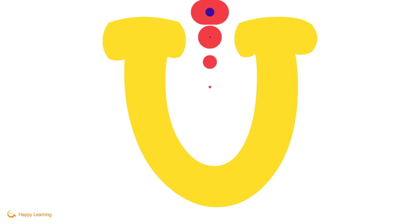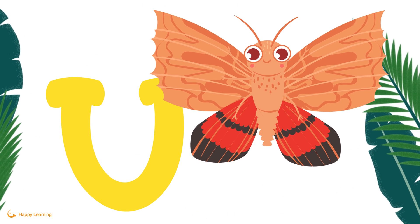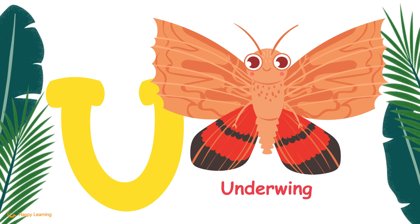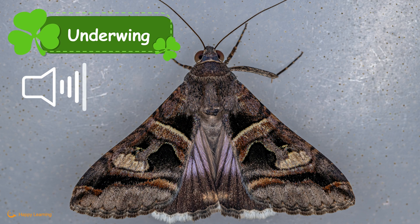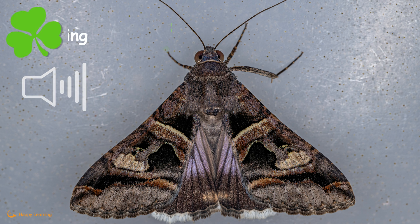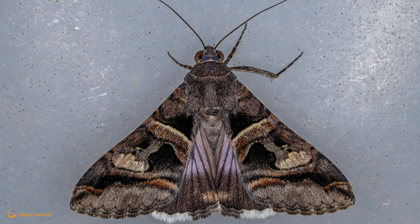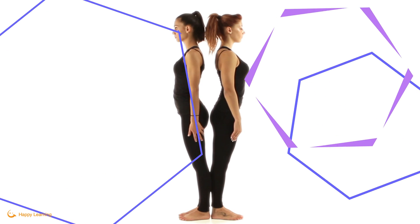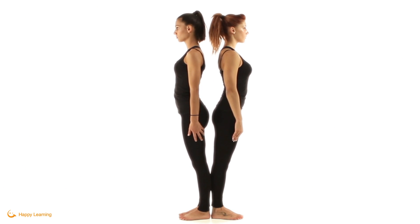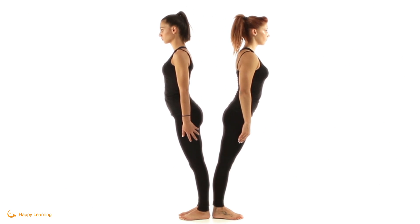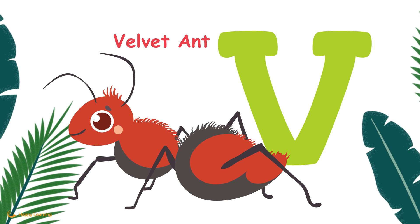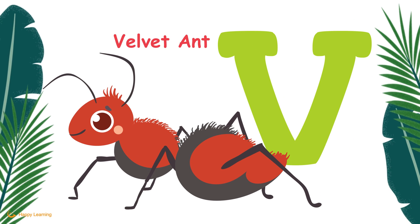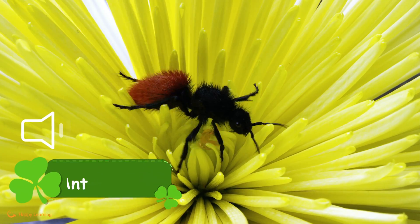U. U is for Underwing. Underwing. V. V is for Velvet Ant. Velvet Ant.